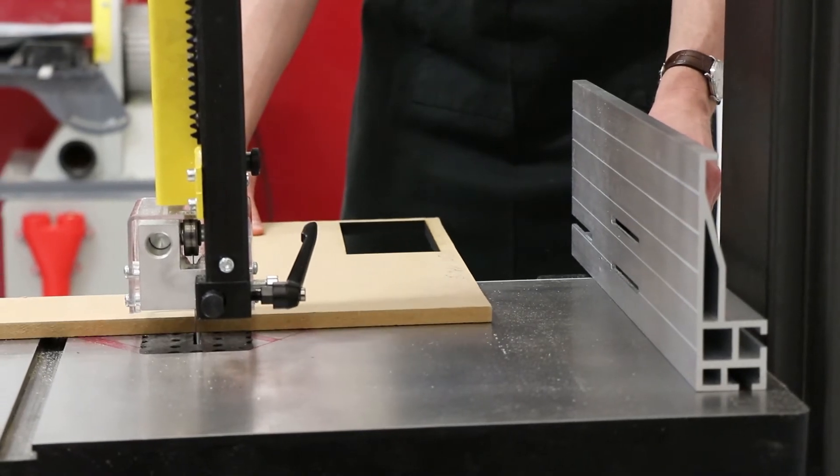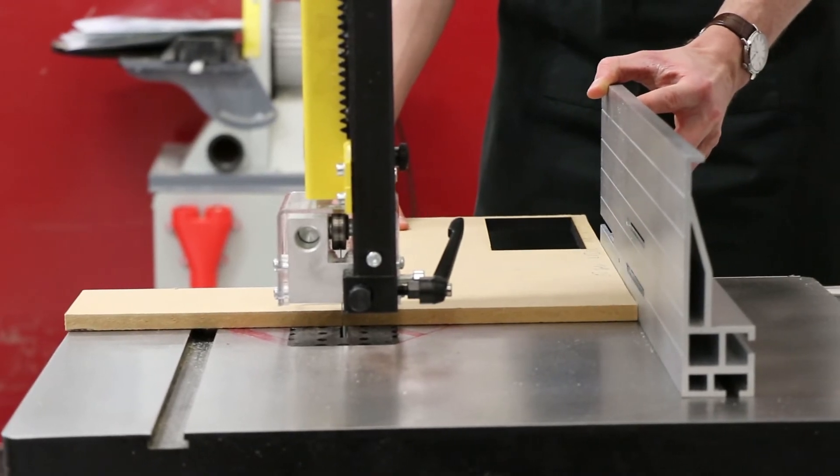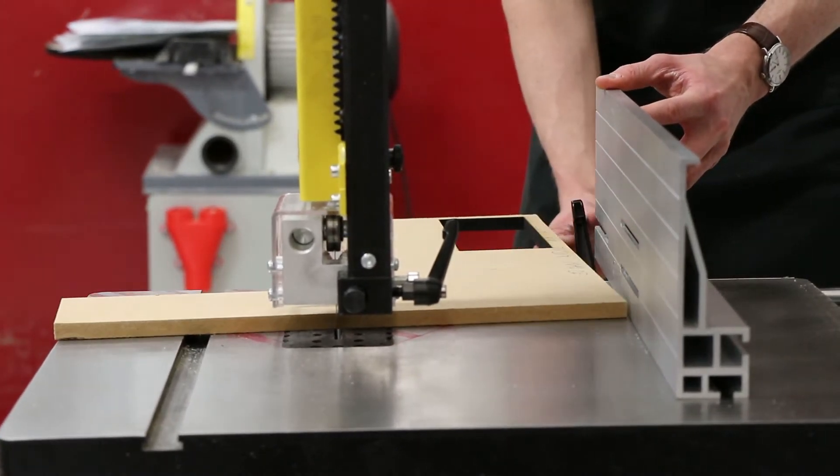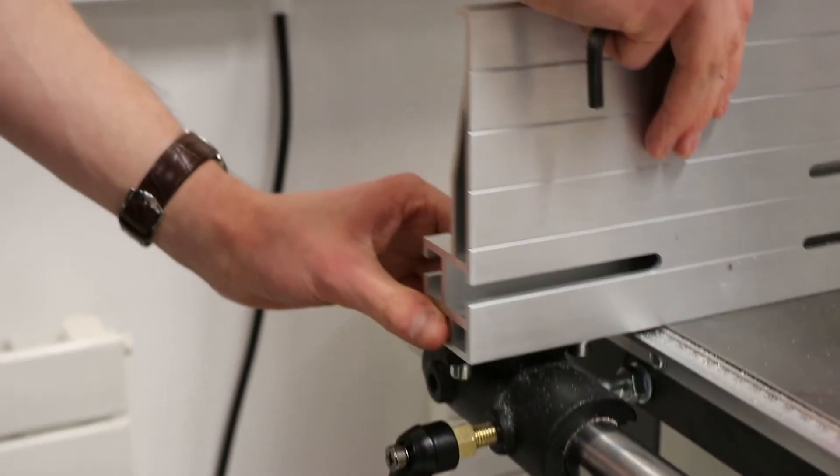On the bed of the bandsaw there are adjustable fences that can help guide the material. These should be used to help measure and cut straight lines. The fences can be set to two different configurations and can be adjusted using two allen bolts.